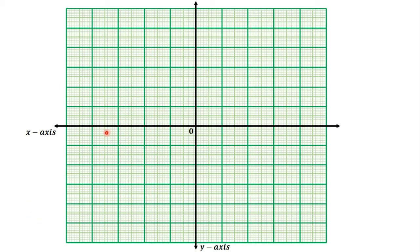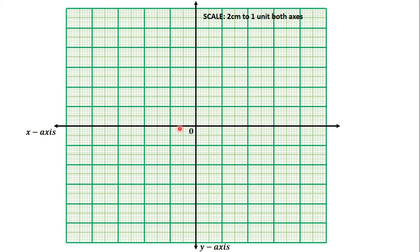Now let's learn how to number the x-axis and the y-axis. Before we number them, we will have to know the scale of the graph. In some questions, you will be asked to choose your own scale, but in other questions, the scale will be given to you. Let's say that the scale is 2 cm to 1 unit on both axes — so 2 cm to 1 unit on the x-axis and 2 cm to 1 unit on the y-axis.